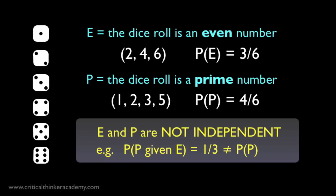Similarly, if we know that the dice roll is even, that affects the probability that it's also prime. In this case, if we know it's even, then our options are 2, 4, and 6, and only one of those is prime. So the probability of it being prime, given that it's even, is 1 in 3. We know the restricted conjunction rule doesn't work because it doesn't take into account the probabilistic dependence of the two events on one another.